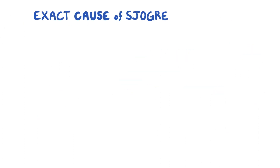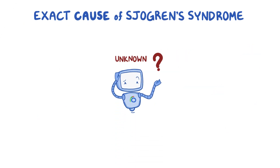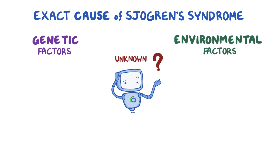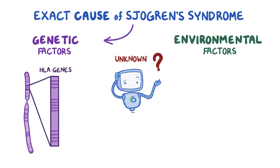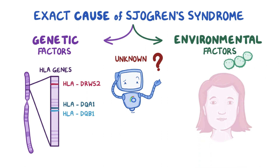The exact cause for Sjogren's syndrome is unknown, but it seems to be related to both genetic and environmental factors. Genetic factors include genes which code for specific types of MHC class 2 molecules, called human leukocyte antigen or HLA genes, specifically HLA-DRW52, HLA-DQA1, or HLA-DQB1. Environmental factors include an infection of exocrine glands like the salivary and lacrimal glands.